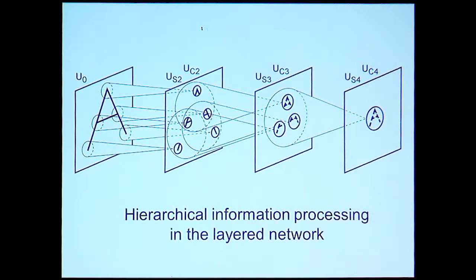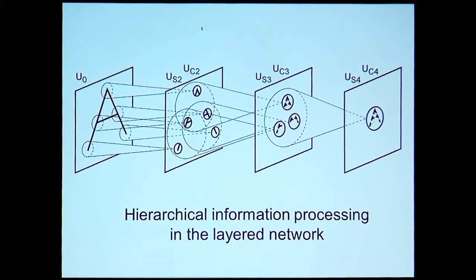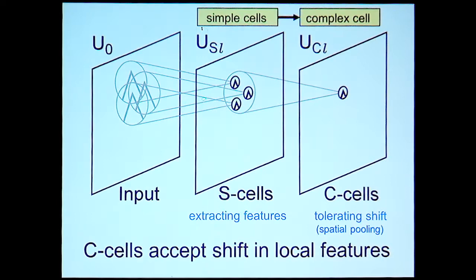I'd like to talk about the principle of robust recognition by the Neocognitron. The cells in the lower stage have a small receptive field and observe a small area of the input image. Local features are extracted in the initial stage, and these extracted features are combined in the next stage, where cells have a larger receptive field and observe more complex features. In the highest stage, each cell responds to one particular pattern presented during the learning stage.